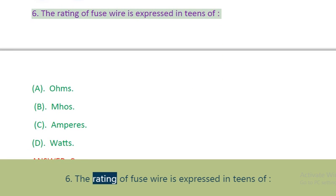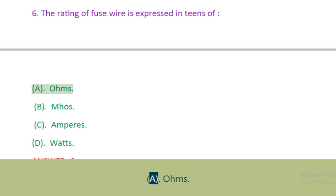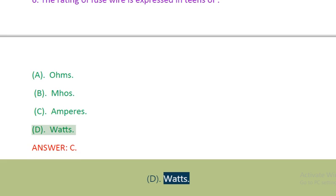Question 6: The rating of fuse wire is expressed in terms of. A. Ohms. B. Mhos. C. Amperes. D. Watts. Answer: C.